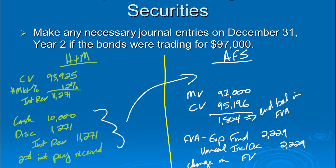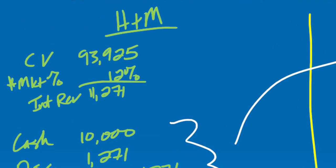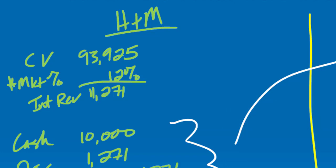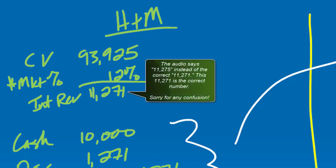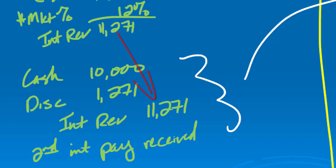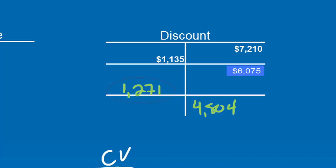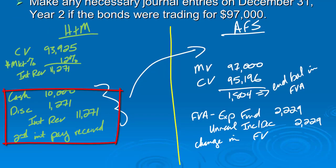If it was a held-to-maturity security, we would start with the carrying value after the last interest payment. I didn't worry at all about fair value because this is the held-to-maturity example and I don't care about fair value — that's irrelevant here. We take the $93,925, multiply it by the effective interest rate, 12%, which gives me $11,275 for this period. I record that as my interest revenue, debit cash for $10,000, and the difference is $1,271. I put that into my T-account and you can see that after the second interest payment, my discount has dropped from $7,210 originally to $4,804 at the end. For held-to-maturity, that would be it — done with that journal entry and adjustment to my T-account.